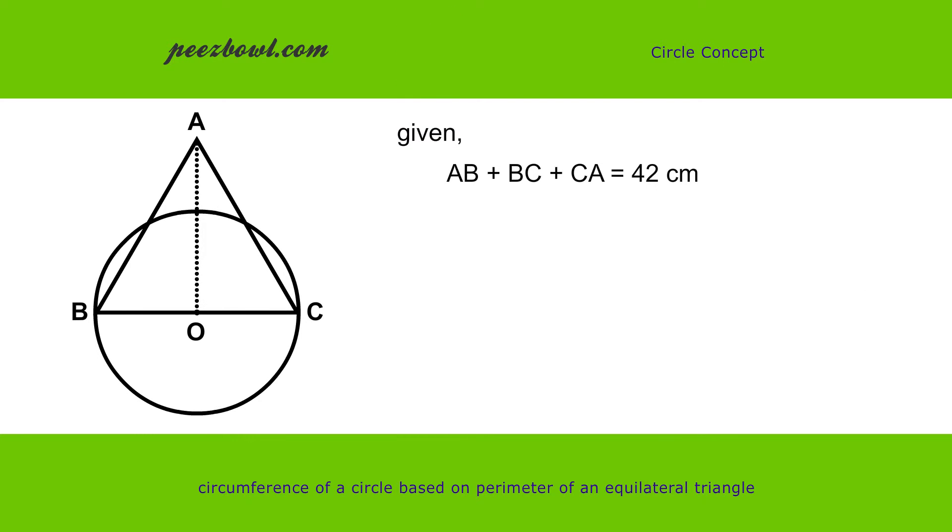We have AB plus BC plus CA equals 42 cm. As we know that value of AB, BC and CA is same,